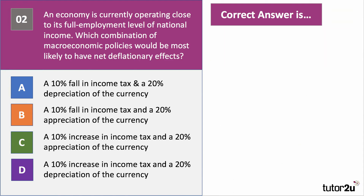Question two. The country is currently operating close to the full employment level of national income. Which combination of macroeconomic policies would be most likely to have net deflationary effects — in other words, policies likely to have the biggest downward pressure on prices? Press the pause button and have a go at this question.